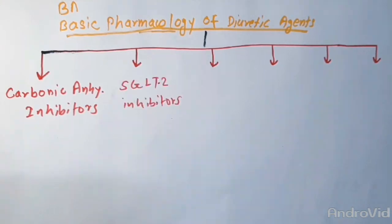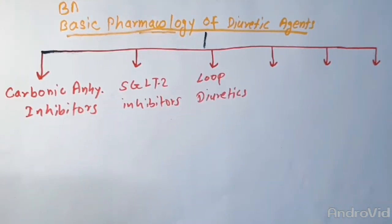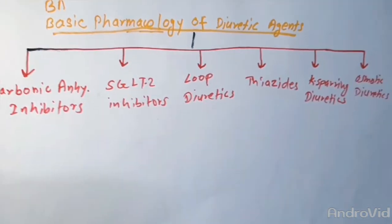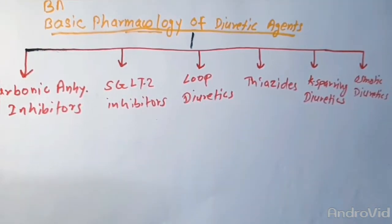We can classify the diuretics into six classes: carbonic anhydrase inhibitors, SGLT2 inhibitors, loop diuretics, thiazides, potassium sparing diuretics, and osmotic diuretics which alter the water excretion, also known as aquaretics.